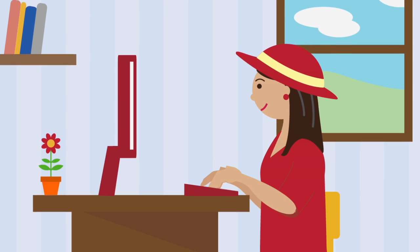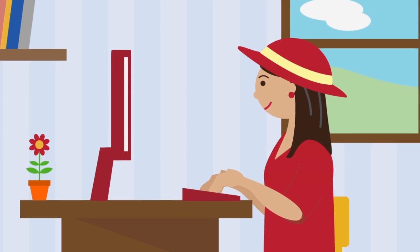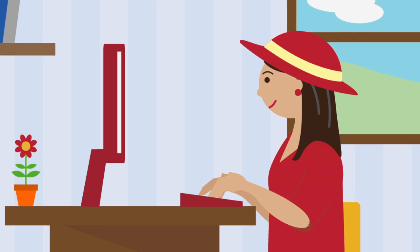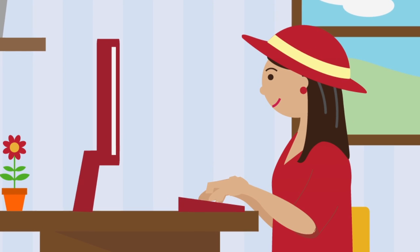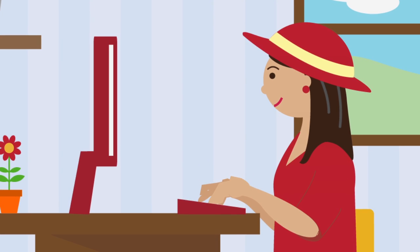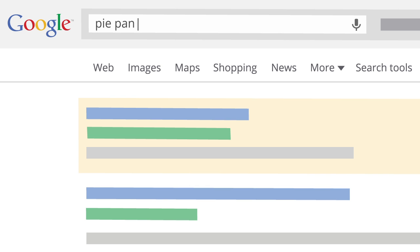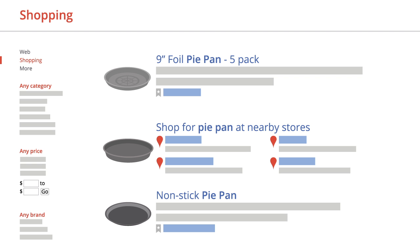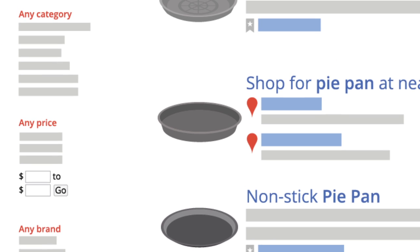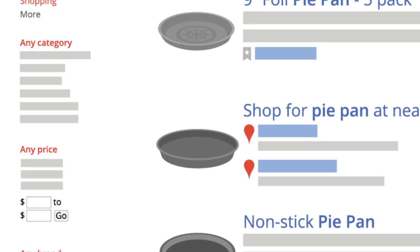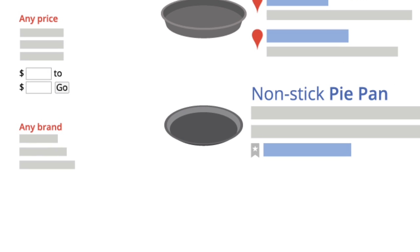Google search has different search options for each mode to help you find exactly what you're looking for. So a search for pie pan in Shopping mode lets you filter by price, type, brand, and more.